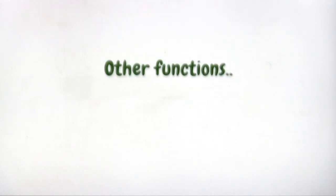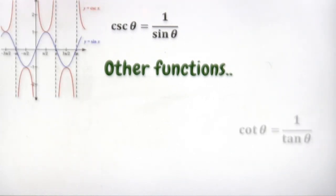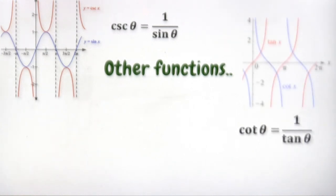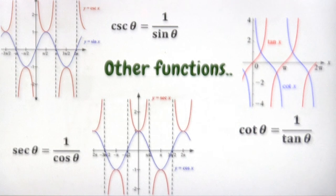There are quite a lot of other trigonometric functions. The cosecant θ equals one over sin θ, cotangent θ equals one over tangent θ, and secant θ equals one over cos θ.